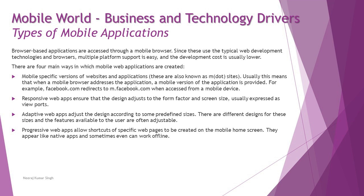For native apps, testing must be done differently on different mobile devices since the app is installed and utilizes resources according to the device type. In contrast, web apps are completely browser-dependent, so the browser handles fitting the application. Progressive web apps allow shortcuts to specific web pages to be created on a mobile home screen — they appear like native apps and can sometimes work offline, acting essentially as a bookmark on the home screen.